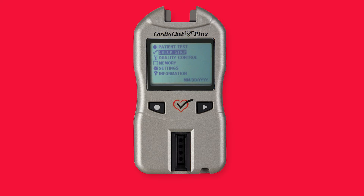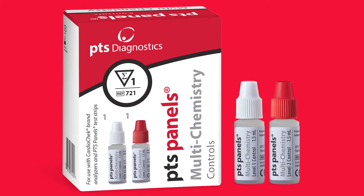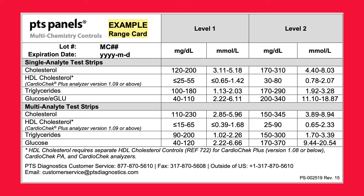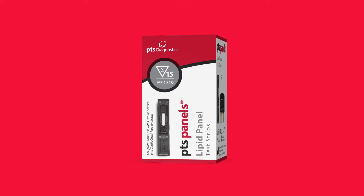Then gather the following materials: the CardioCheck Plus Analyzer, the Level 1 and Level 2 Multichemistry Liquid Control Materials, the Quality Control Instructions found in the box with your control materials, the Quality Control Range Card — which can be found in the box with the control materials or at ptsdiagnostics.com — and the PTS panel's test strips and memo chip.